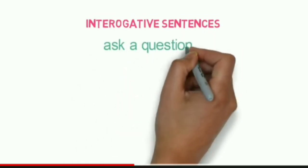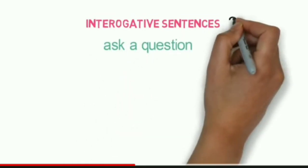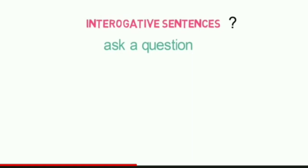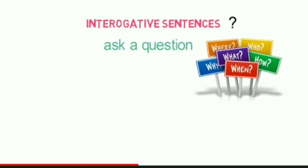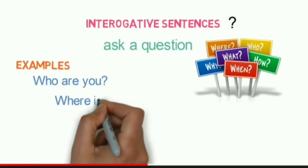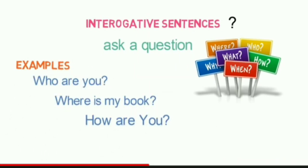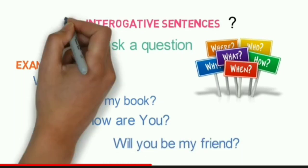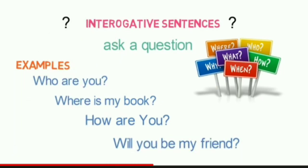Interrogative sentences are used to ask a question and they end with a question mark. The question words — who, whose, what, where, why, and how — are the W5H words used for asking questions. For example: 'Who are you?', 'Where is my book?', 'How are you?', 'Will you be my friend?' Whenever you are asking questions, you are using an interrogative sentence.